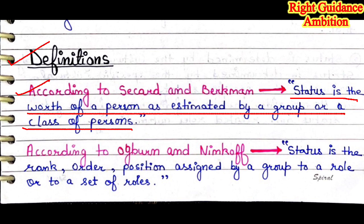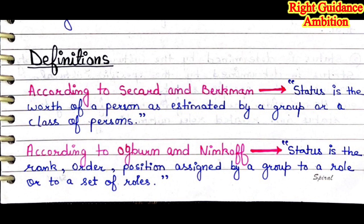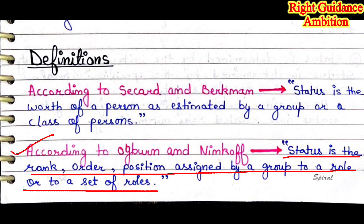A person's worth is how well they can perform in a particular group. In that group, what is their capability and what are their skills — according to that, they will be given a status. If a person performs well, they can become a leader. The second definition is according to Ogburn and Nimkov: status is the rank, order, or position assigned by a group to a role or a set of rules. So status is a rank given to an individual — it can be an order or a position. For example, 1st, 2nd, 3rd position we give in the group. Whatever is assigned to an individual, we call that status.